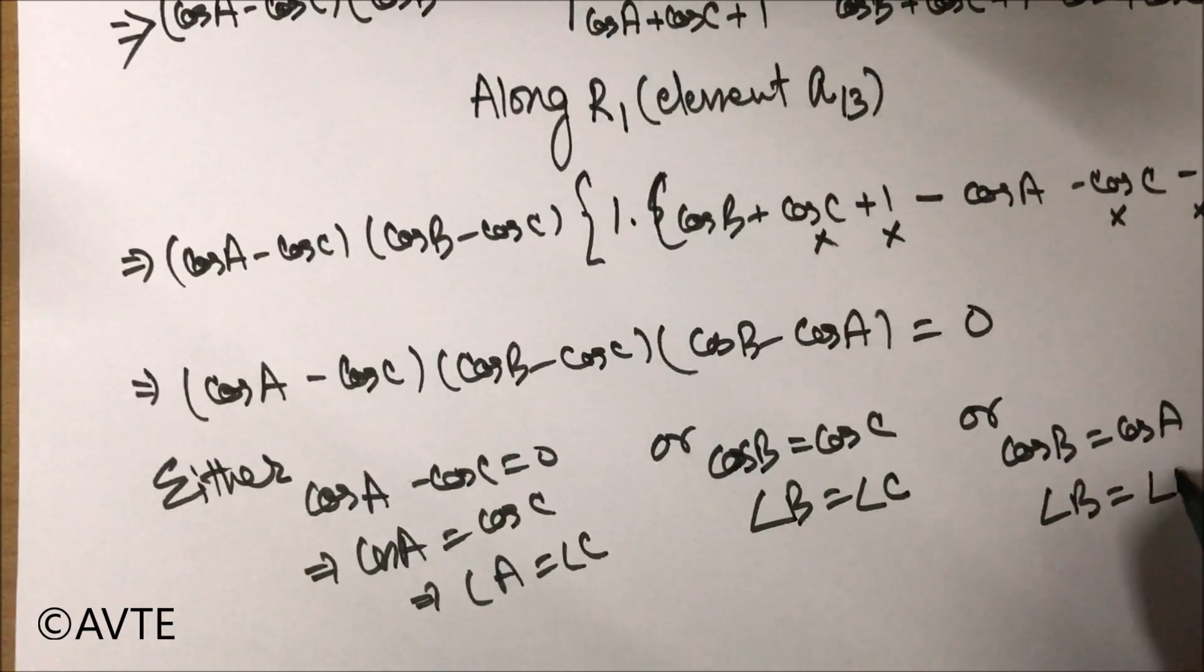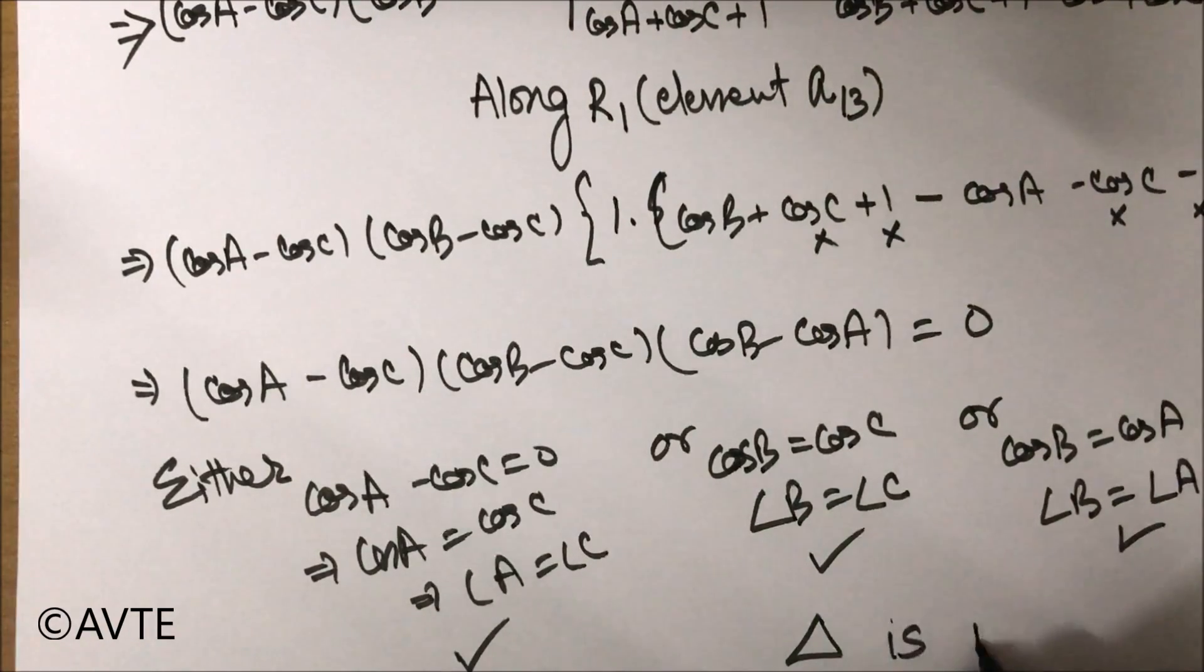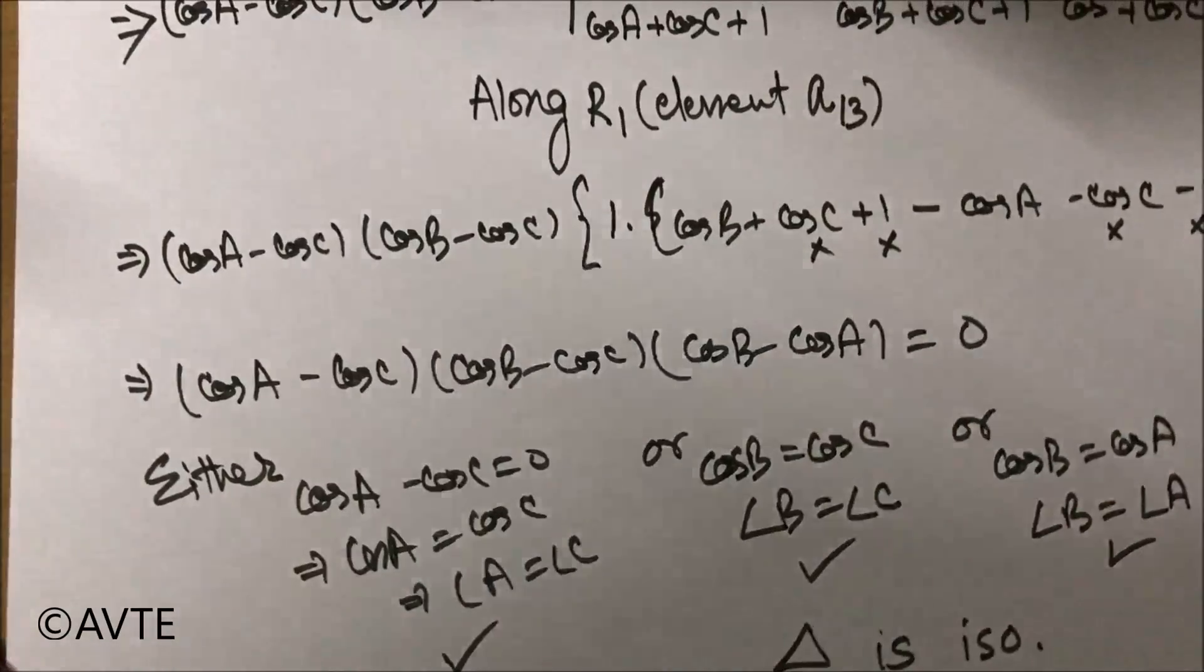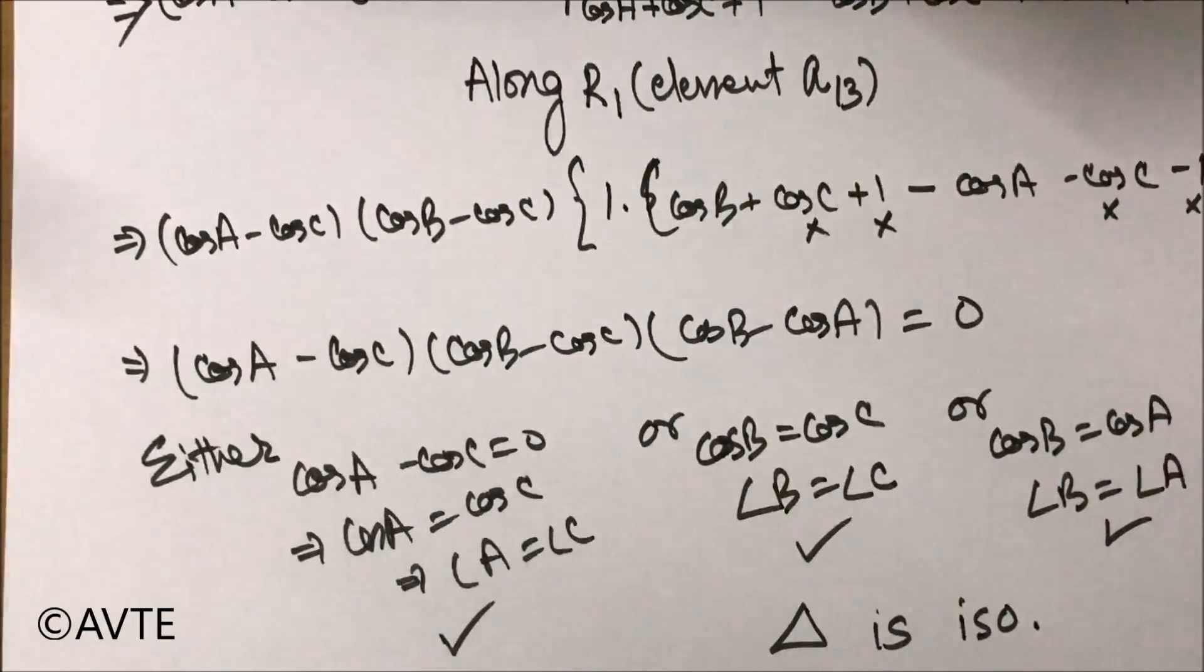...indicating that angle B is equal to angle A. So in each case, triangle is isosceles. And one thing is clear that it is purely isosceles because either angle A will be equal to angle C, or angle C will be equal to angle B, or angle B will be equal to angle A. The three cannot be equal at the same time. So the triangle is purely isosceles.